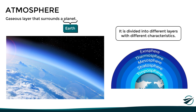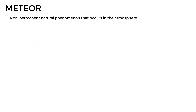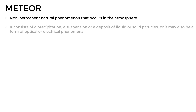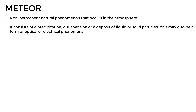Let's go back to the general concept of meteorology. This term comes from 'meteor,' which is defined as a non-permanent natural phenomenon that occurs in the atmosphere. It may consist of either a precipitation, a suspension, or a deposit of liquid or solid particles, or in some cases, it may also be a form of optical or electrical phenomena. We must clarify that the term meteor is not the same as meteorite or meteoroid, since these refer to a solid object that comes from space and penetrates the Earth's atmosphere.